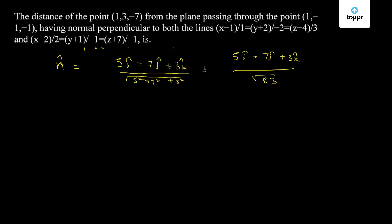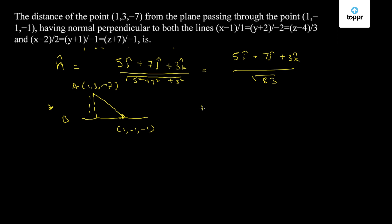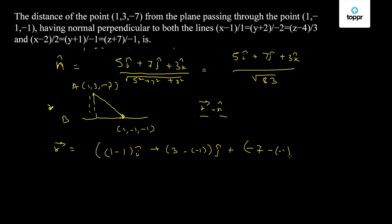Moving further, the distance can be calculated as follows. The plane passes through the point (1, -1, -1) and the given point A is (1, 3, -7). The distance is the perpendicular distance along the normal vector. So the r-vector is (1 minus 1)i-cap plus (3 minus -1)j-cap plus (-7 minus -1)k-cap.